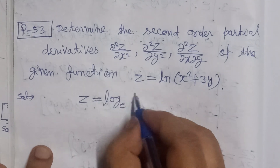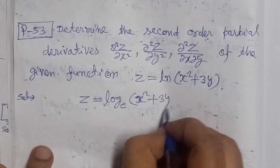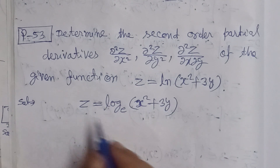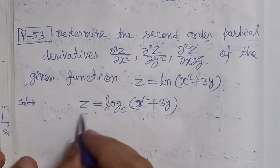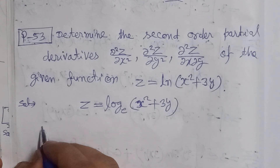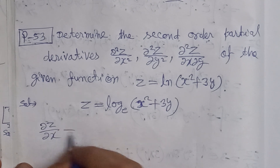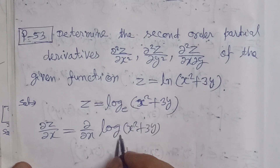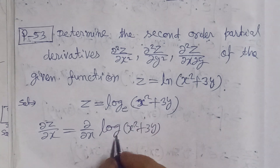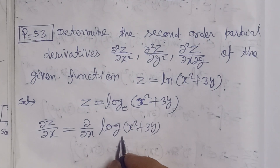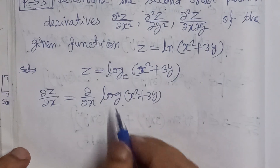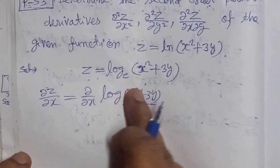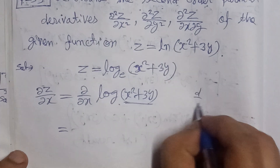First we find del²z/del x². For the second derivative we have to find the first derivative first, so I differentiate this equation with respect to x partially. We differentiate the right hand side, which is x² + 3y. If we do not write e in log it is understood as base e, so I will not write e here.